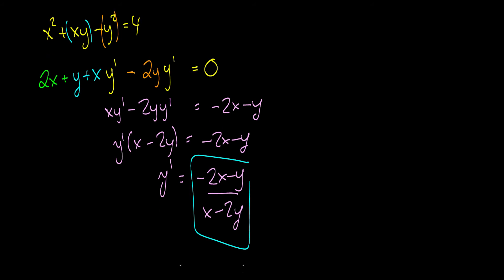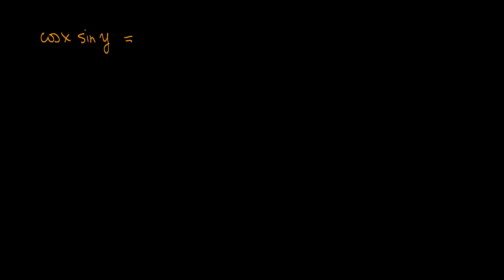I'm going to leave you with one practice question — a nice implicit differentiation question that involves trig. The equation is cosine of x times sine of y equals 1. Find the derivative and isolate y prime.